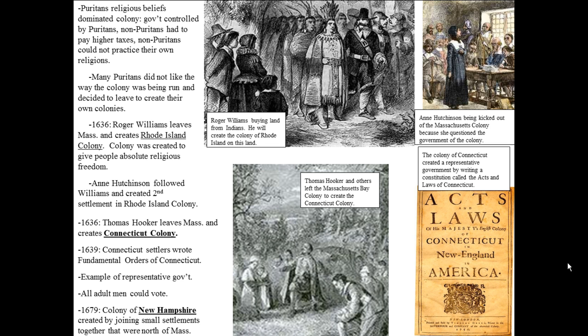In 1636, Thomas Hooker left Massachusetts and created the Connecticut Colony. The really important thing that came out of Connecticut is the Fundamental Orders of Connecticut — a written agreement on how to run the government, and an example of representative government. That gives you three representative governments in the colonies: the House of Burgesses in Virginia, the Mayflower Compact in Plymouth, and the Fundamental Orders of Connecticut. In Connecticut, all adult men could vote, and you didn't even have to own land to vote.